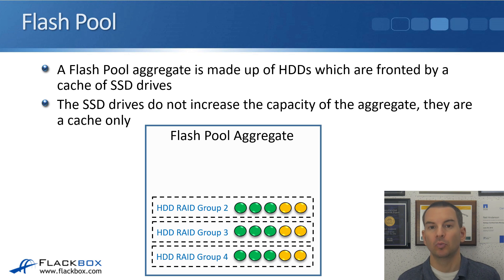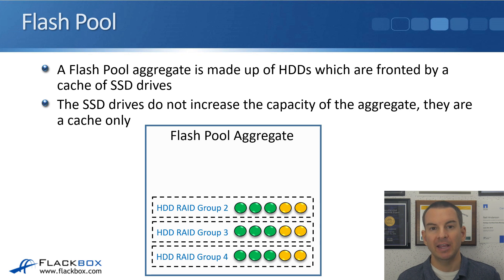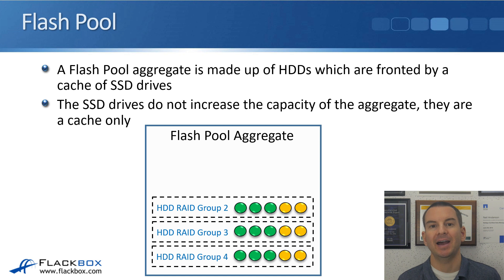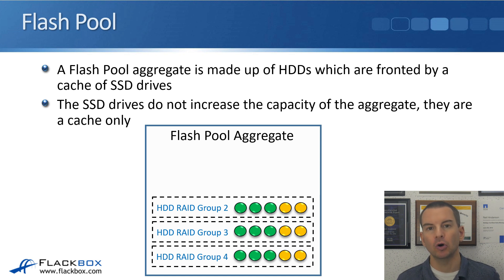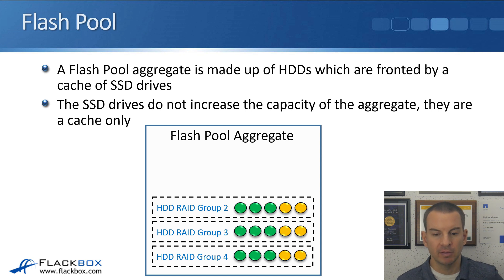FlashPool works differently. FlashPool is an aggregate that is made up of HDDs or spinning disks, and they are fronted by a cache of SSD drives which improves the performance for that aggregate. The SSD drives do not increase the size of the aggregate — they're used as a cache only.